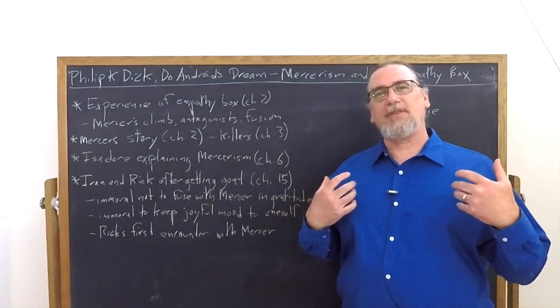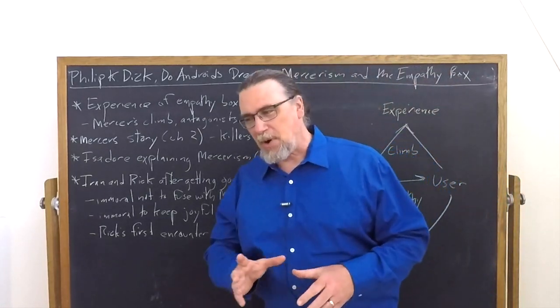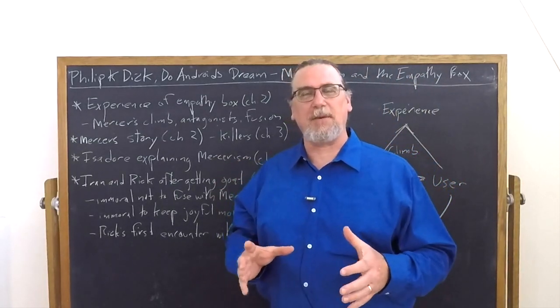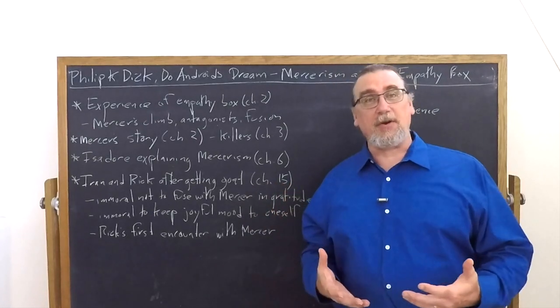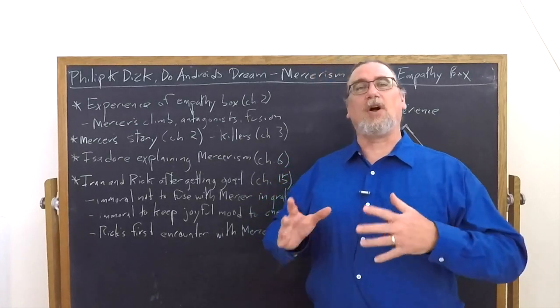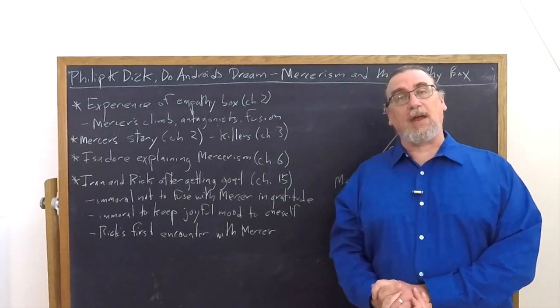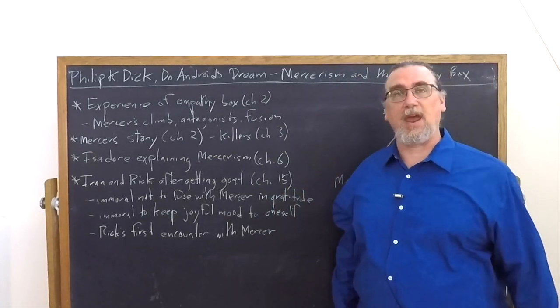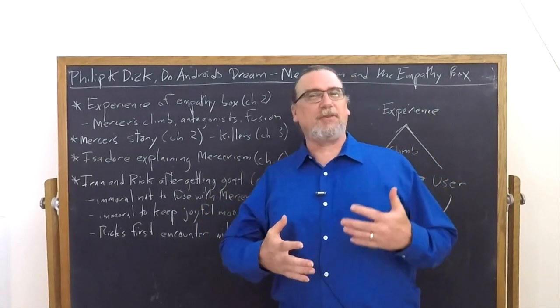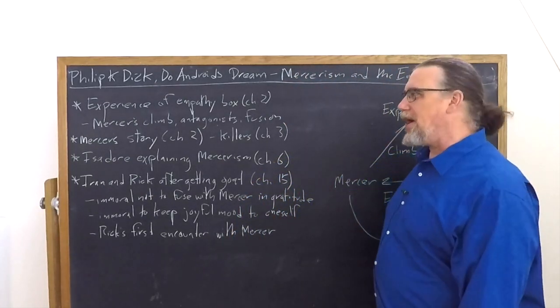Mercerism is partly religion, partly psychotherapy, partly philosophy, partly experience. It's centered around this guy Mercer and the practice of using what's called an empathy box in order to attain a state of fusion. This is something that divides human beings and androids—they not only can't participate in the fusion, they also can't wrap their heads around what's going on.